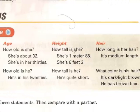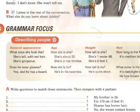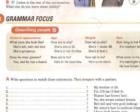Height: 'How tall is she?' 'She's one meter 88 — she's six feet two.' 'How tall is he?' 'He's quite short.' Hair: 'How long is her hair?' 'It's medium length.' 'What color is his hair?' 'It's dark brown.' 'It's light brown.' 'He has brown hair.' That is describing people — now you know how to describe people.